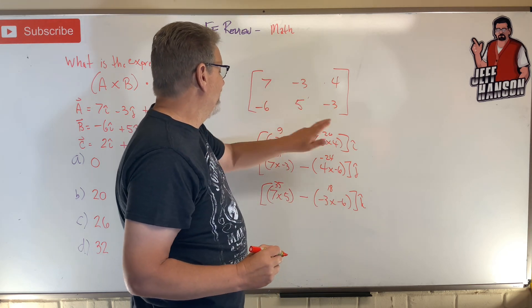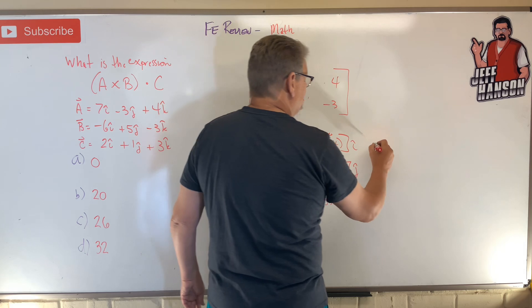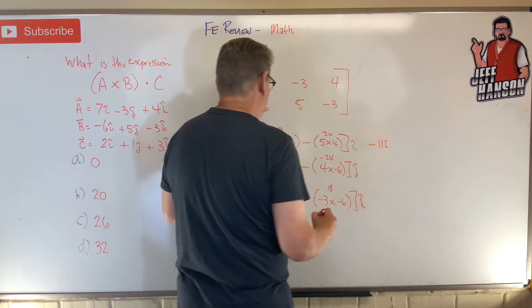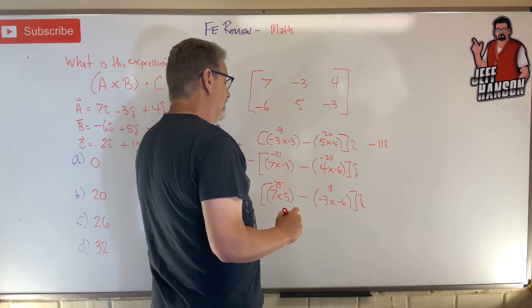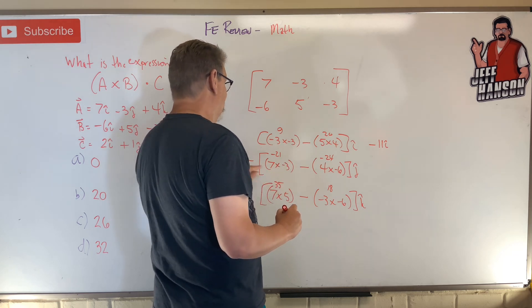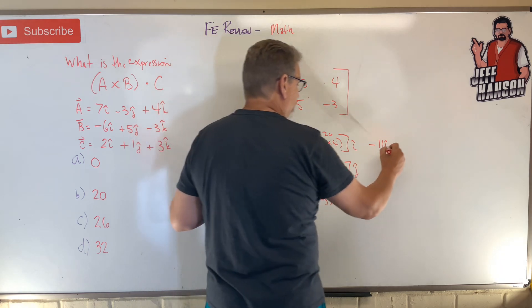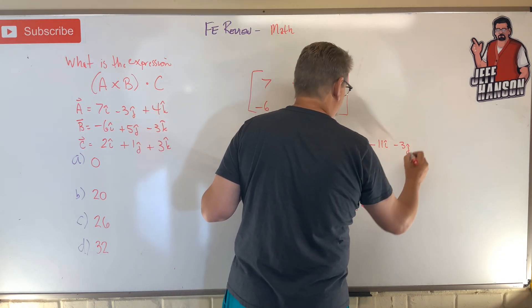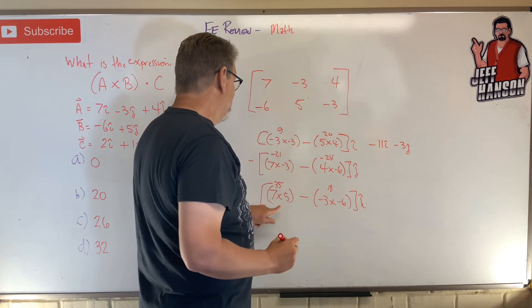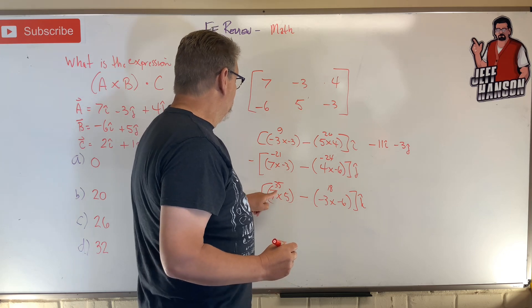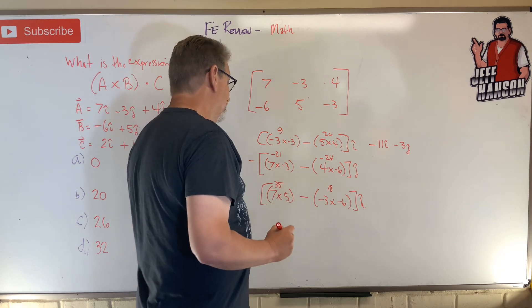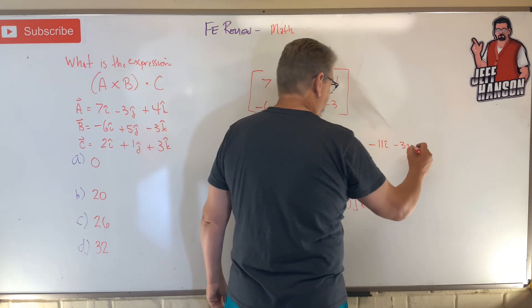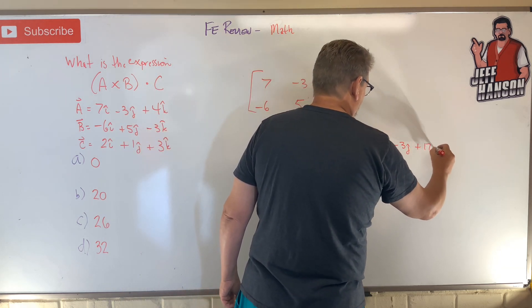So nine minus 20 is minus 11. There's one. And then minus 21 minus 24 leaves me a positive three, but then this takes it back to a negative. And then down here, I have what? 35 minus 18. That sounds like 17, doesn't it?